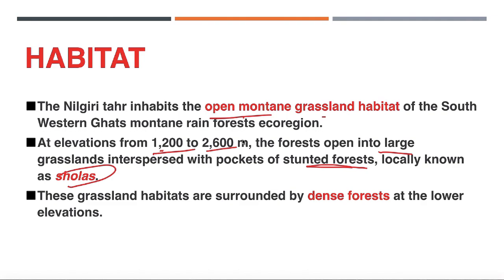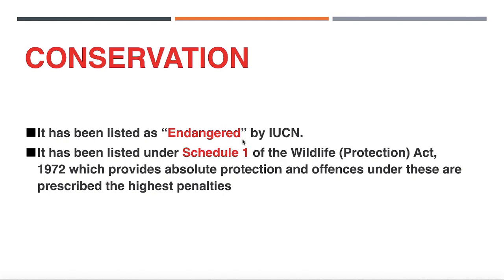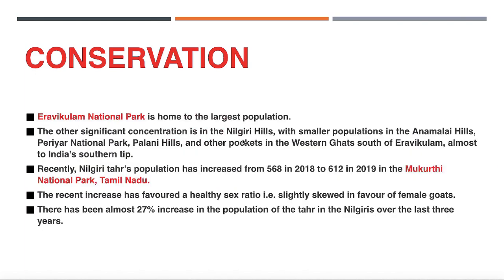You get more Nilgiri Tahr in these shola grasslands at higher elevations. As you come down, these grasslands are surrounded by dense forests — stunted forests up top, dense forests below. In terms of conservation, its IUCN status is Endangered, and it is listed under Schedule 1 of the Wildlife Protection Act.